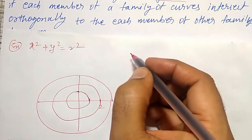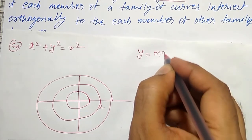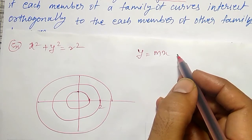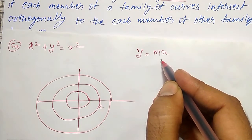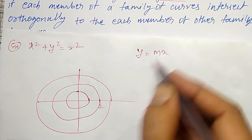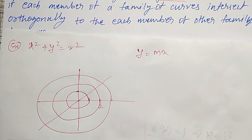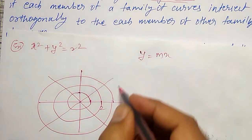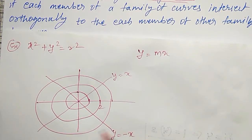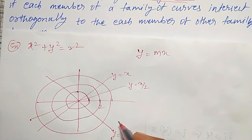Similarly, consider the equation of a straight line passing through the origin: y = mx. For different values of m — if m is positive, this is the straight line y = x or its extension. If y = −x, and y = x/2, these are different lines through the origin with different slopes.